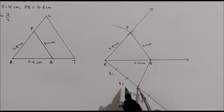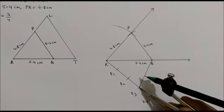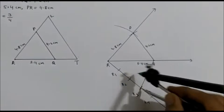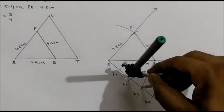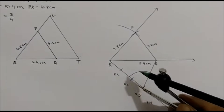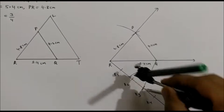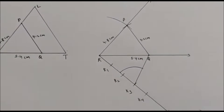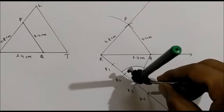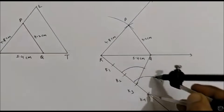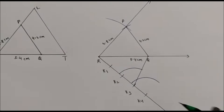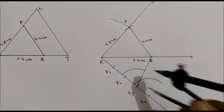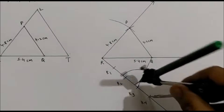First keep the compass on R3 and take a distance, then cut an arc. Now without changing the distance, keep it on R4 and draw an arc from there also. First keep it on R3, draw the arc, then keep it on R4 and draw the arc.